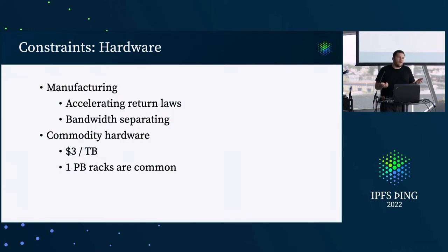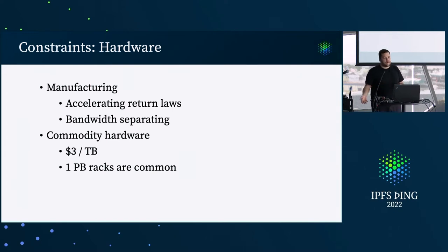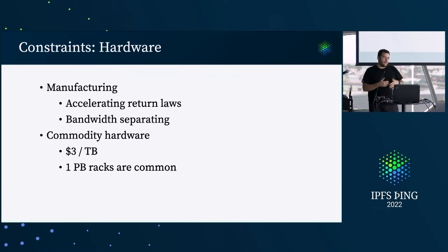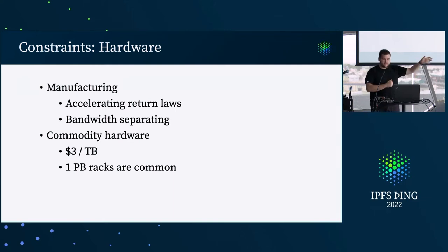Today you can totally handle full routing tables in hardware because hardware has gotten that much better. We're talking about hardware getting better by many orders of magnitude in a timespan where we just connected everyone in the world — humanity is not growing by many orders of magnitude every few years. So hardware has gotten dramatically better, the accelerating returns laws continue.